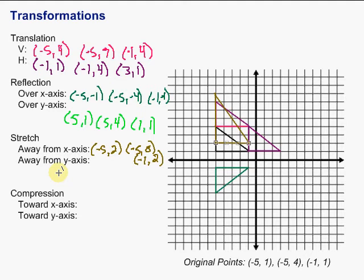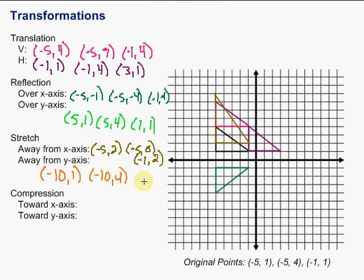We can also stretch away from the y-axis. We multiply the x-coordinates by 2. So negative 5, 1 becomes negative 10, 1; negative 5, 4 becomes negative 10, 4; and negative 1, 1 becomes negative 2, 1. Graphing those would show the figure stretched away from the y-axis.